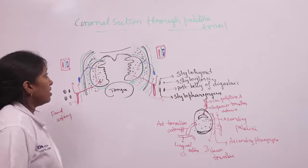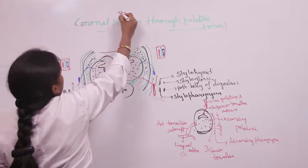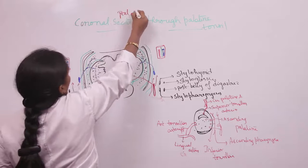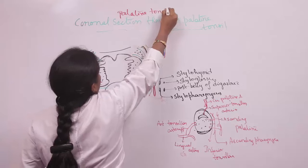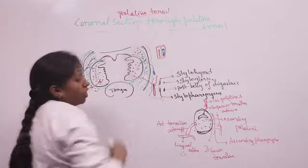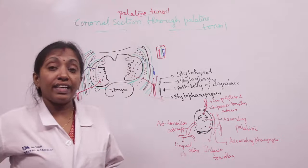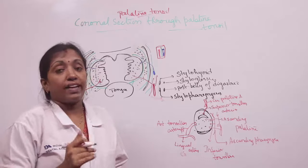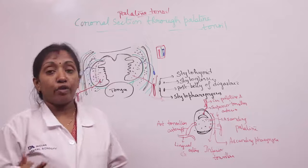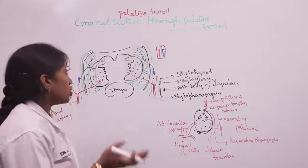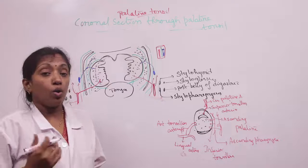The palatine tonsil — they are the almond-shaped lymphoid masses situated on either side on the lateral wall of the oropharynx.